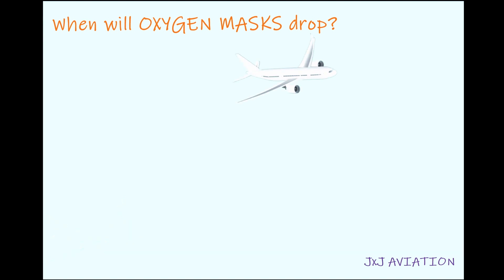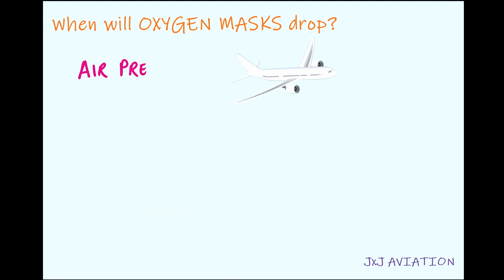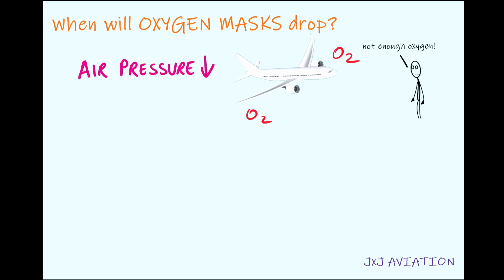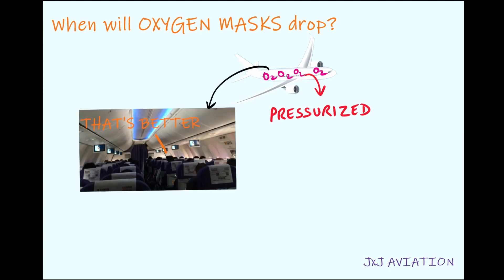After an aircraft takes off, it will climb to very high altitudes for the cruise phase, since the aircraft experiences less drag at these altitudes. But at these high altitudes, the outside air pressure will be very low, meaning there will be very little oxygen available, which is not sufficient for humans. So the aircraft has to be pressurized to ensure sufficient oxygen is available in the aircraft cabin for the passengers and the crew.